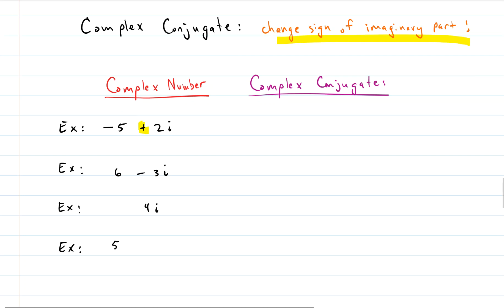So here's the imaginary part in the first example. And it's 2i. So it's a positive. So if we change the sign, that means we get negative 5 minus 2i. There's the complex conjugate. The next one is 6 minus 3i. That becomes 6 plus 3i. There's the complex conjugate. Here we have a positive 4i. So that becomes negative 4i. And this next one is just 5.